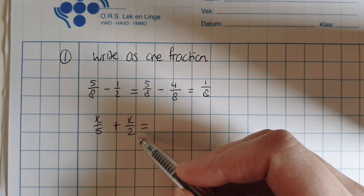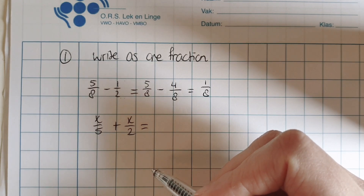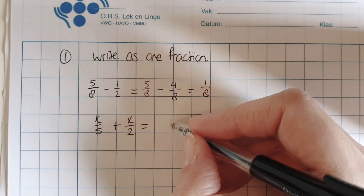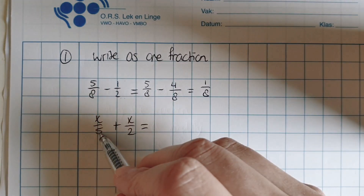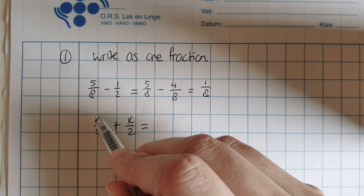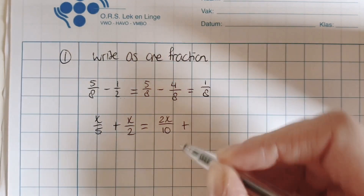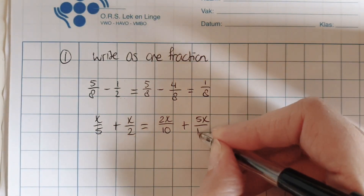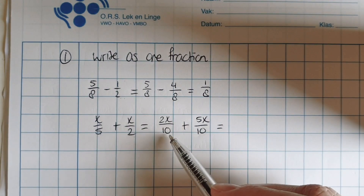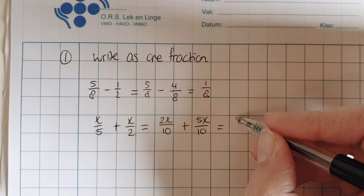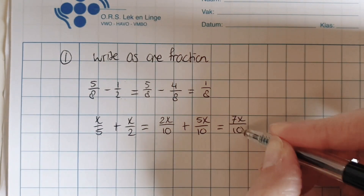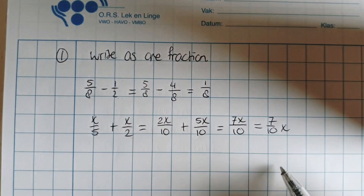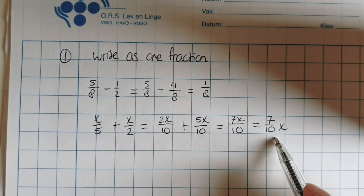Denominators are not the same, let's make them equal. If I look at the numbers 5 and 2, because I know my tables really well, I'm going to change them into 10. So if I'm going to make this 5 a 10, I do it times 2, this one also times 2, so it's going to be 2x over 10. If I want to change this one into a 10, I have to do it times 5, so this one times 5 as well. With plus and minus, denominators need to be the same, so I add the numerators: 7x over 10. Both forms are correct.